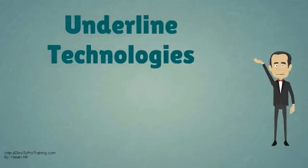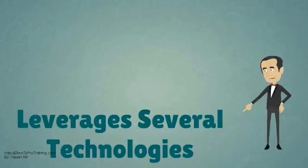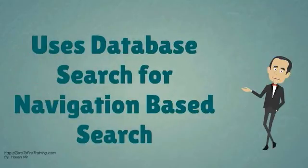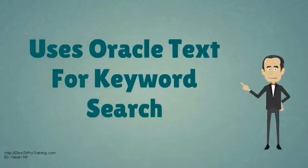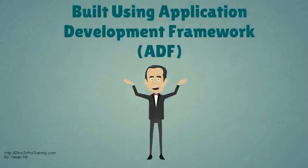Underlying technologies: Oracle Fusion Applications Help leverages several technologies. It uses database search for navigation-based search, and Oracle Text for keyword search. It integrates with Secure Enterprise Search, Enterprise Crawl, and Search Framework to crawl the repository. It is built using Application Development Framework, ADF.